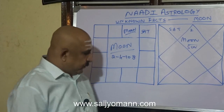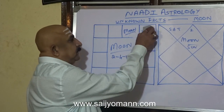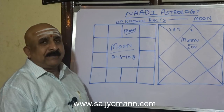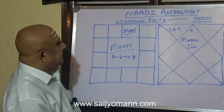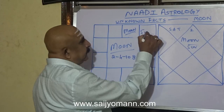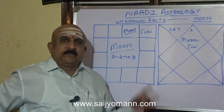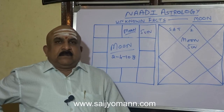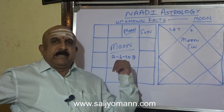Now we will put Sun in the 2nd house from Moon. Moon is the mother of the native, Sun is the father of the native. We have placed Sun in the 2nd house from Moon.